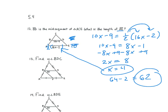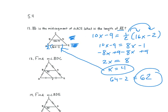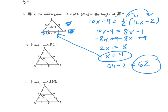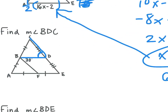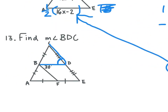Find the measure of angle BDC. We know that BF is parallel to CE, and BD is our transversal. Angle BDC is going to be congruent to angle FBD, the angle that says 30, because they're alternate interior angles. So if they're congruent, we know that BDC is also going to be 30 degrees.